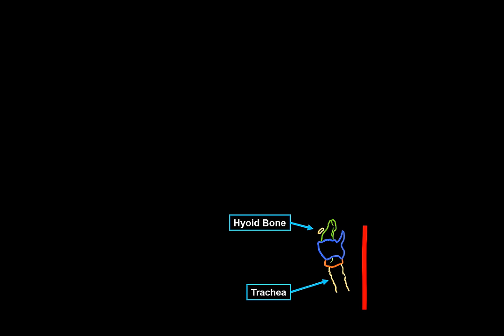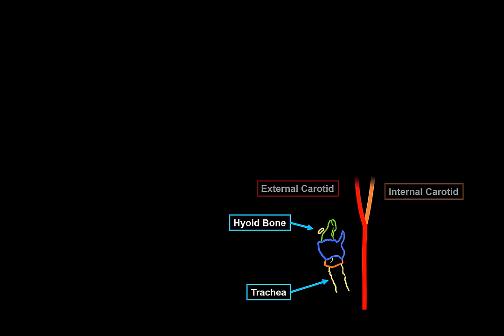The common carotid ascends along the neck, and as it reaches the upper border of the thyroid cartilage, it divides into the external carotid and the internal carotid arteries. The common carotid has no side branches at all — it just ascends and then divides. One special feature is that at its upper part it has chemoreceptors called the carotid bodies, which sense chemical changes in the bloodstream as part of homeostasis.